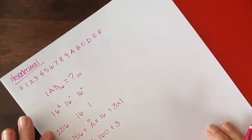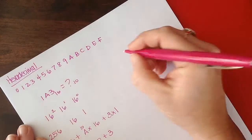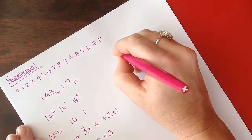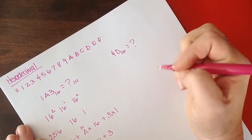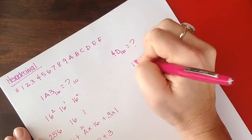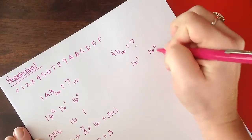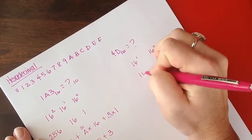So let's try another example now. Let's do 4D, base 16 is equal to what in decimal? We've got 16 to the 1 we need, 16 to the 0, so 1 and 16.